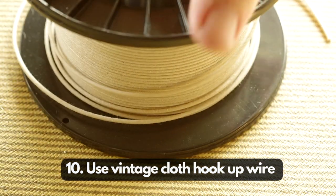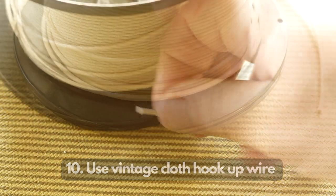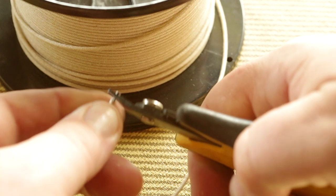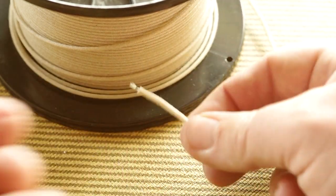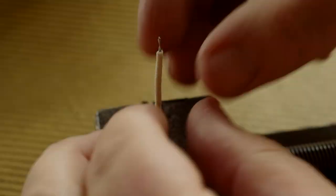Tip number 10 is to use vintage cloth hookup wire. This is very classically found in Fender style guitars. It's made by a company called Gavit and it's very easy to work with, easy to push forward and pull back. Brilliant stuff.